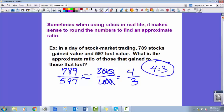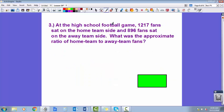For number 3 in your notes, I would like you to do something very similar for this problem. At the high school football game, 1,217 fans sat on the home team side, 896 fans sat on the away team side. What was the approximate—and there's your clue that you're going to round—ratio of home team to away team fans? Don't forget to write your ratio in its lowest terms.